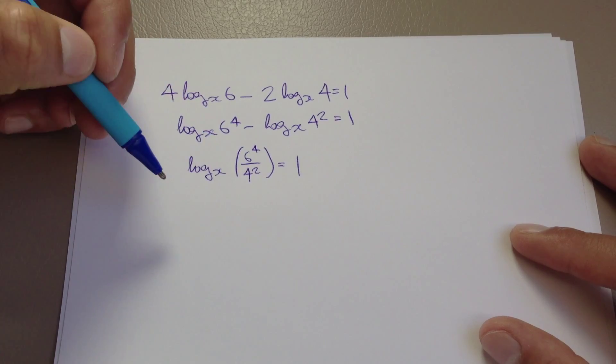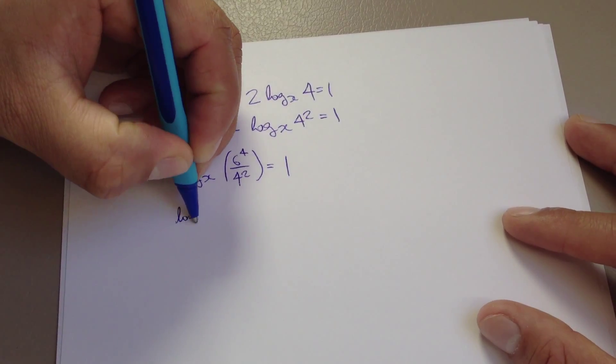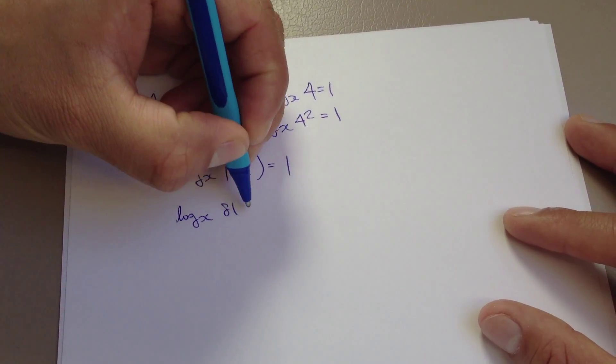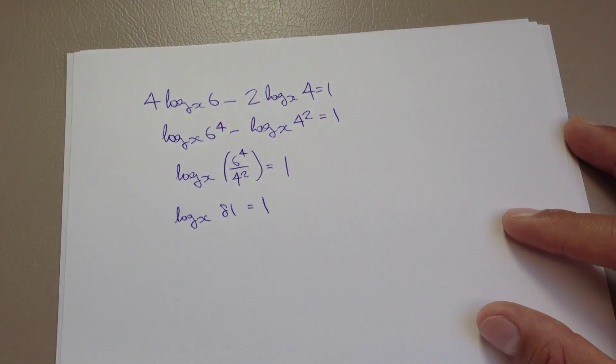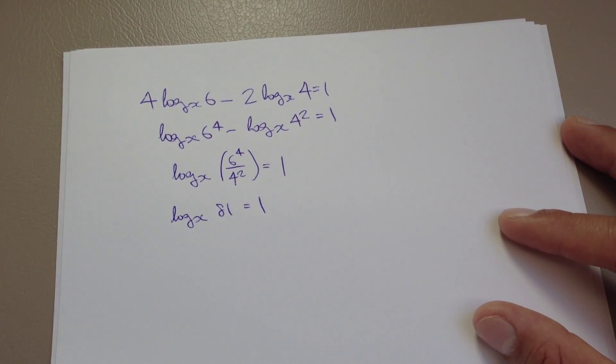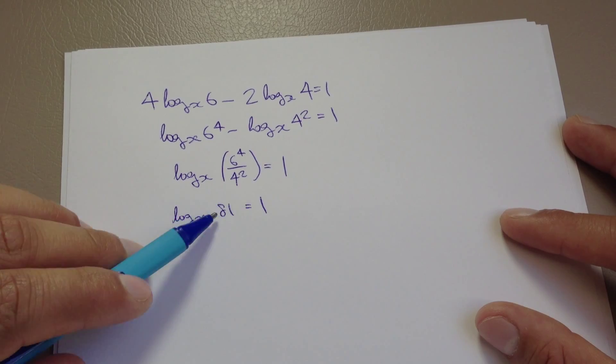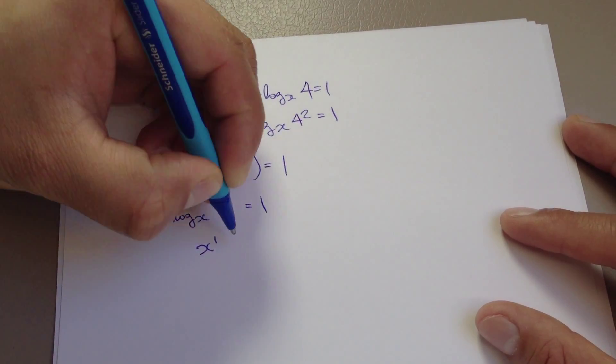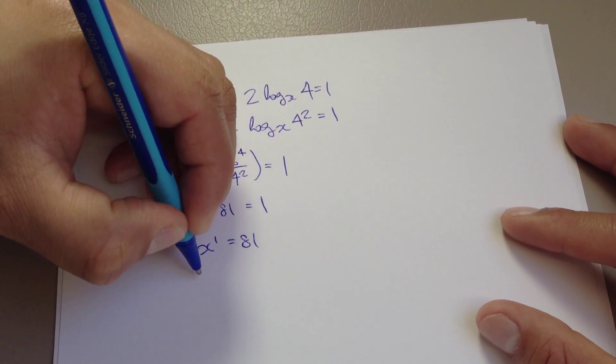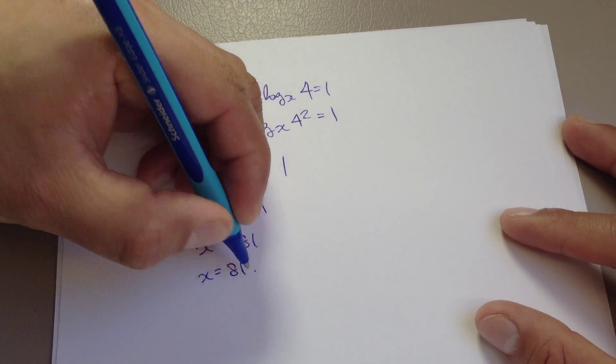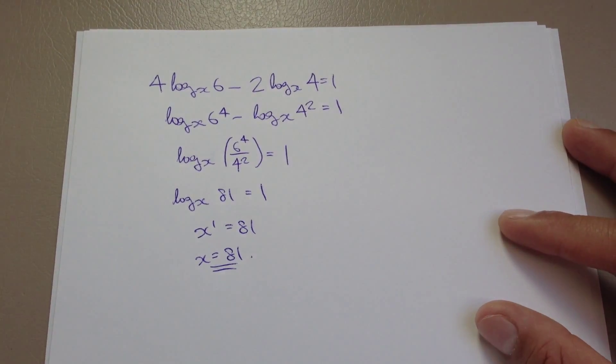If you pop this into the calculator, you'll see that works out to be log to the base x of 81 equals 1. What we're saying here is x to the power of 1 equals 81, hence x must be 81. It's as simple as that.